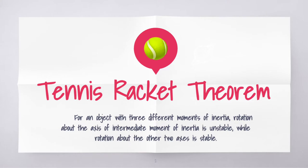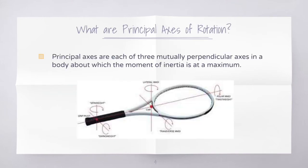Tennis Racket Theorem states that for an object with three different moments of inertia, rotation about the axis of intermediate moment of inertia is unstable, while rotation about the other two axes is stable. Tennis Racket Theorem is difficult to explain intuitively, which is why we need to turn to the math behind it.